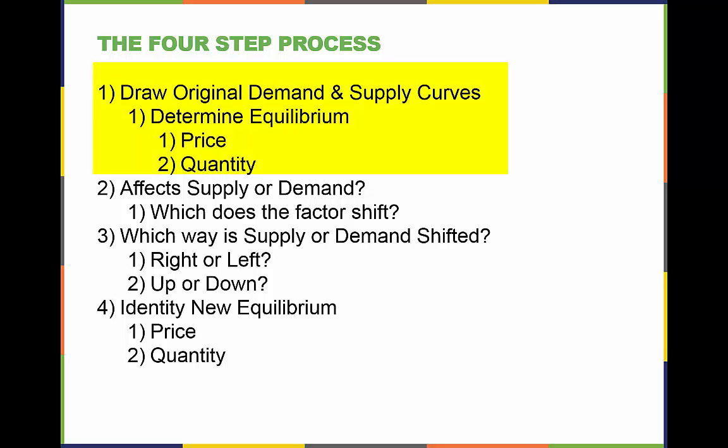Step number one: we need to draw the original demand and supply curves. This includes determining the original equilibrium — the original equilibrium price and the original equilibrium quantity.